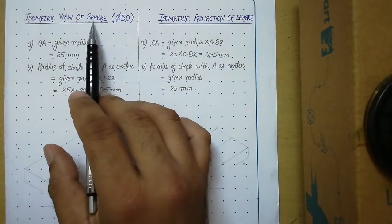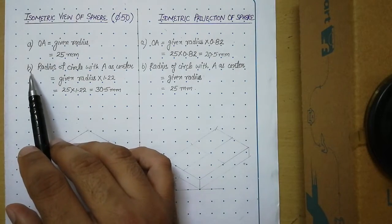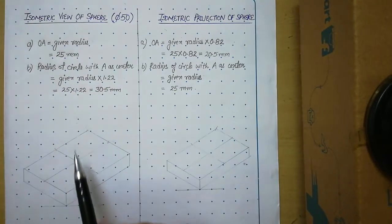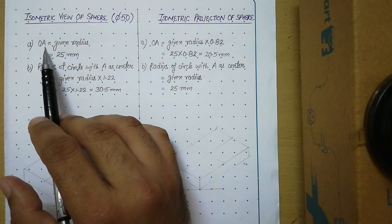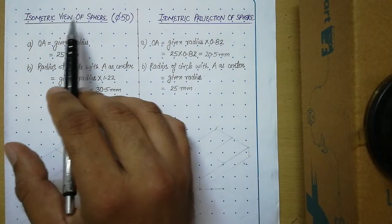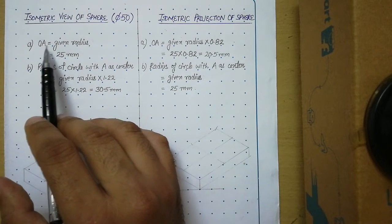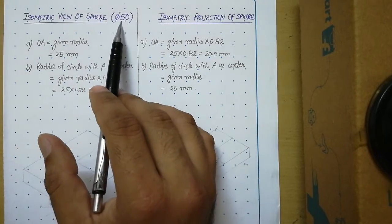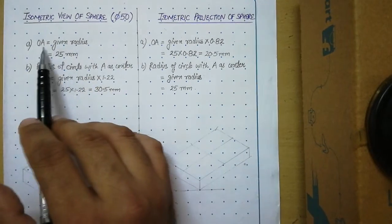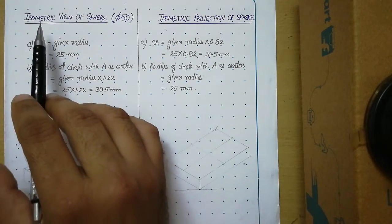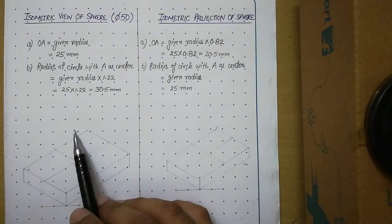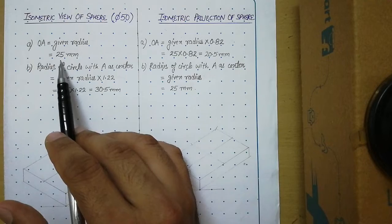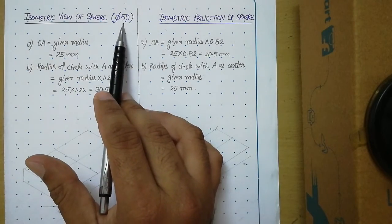In the case of isometric view of a sphere, two calculations are required. I have to rest this sphere centrally on top of this block. From the center of this block, I will draw a vertical line and call it OA. If drawing the isometric view of a sphere, the length of OA will be equal to the given radius. The diameter is given as 50 mm, so the radius will be 25 mm. So the first step is: from center, draw a vertical line named OA equal to 25 mm, which is the given radius.